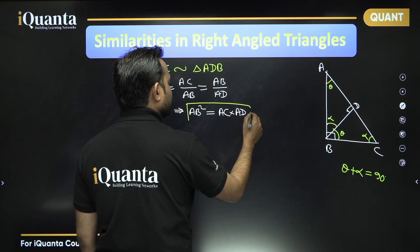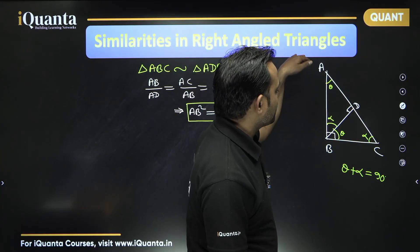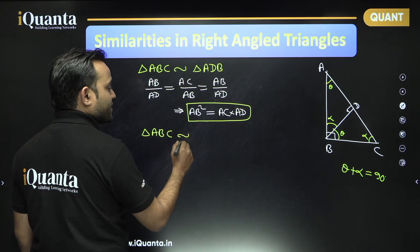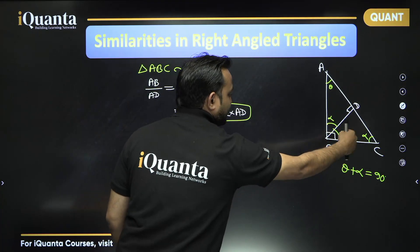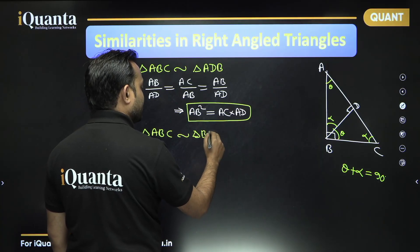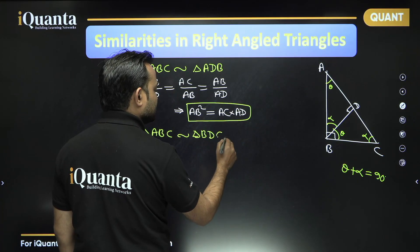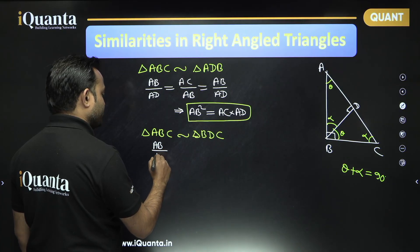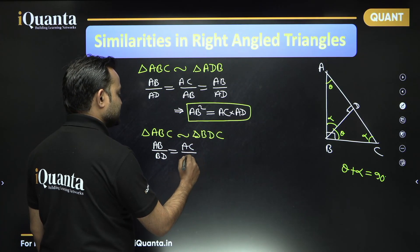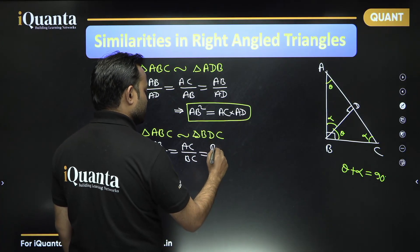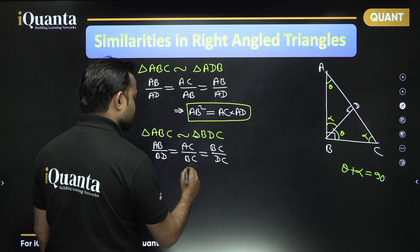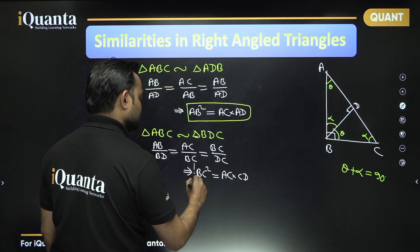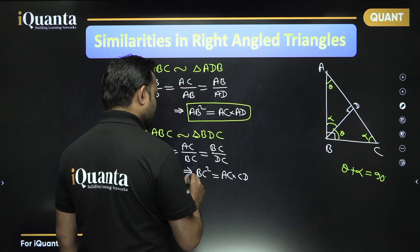This is a really good result — you should remember that AB squared equals AC into AD. Now in triangle ABC and triangle BDC, angle A is theta and angle B is theta, angle B is 90 degrees here and angle D is 90 degrees. From there we get BC squared is equal to AC into CD.